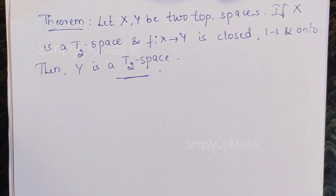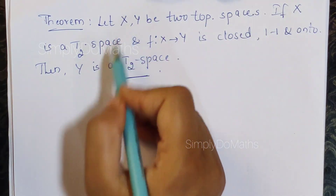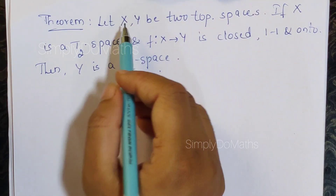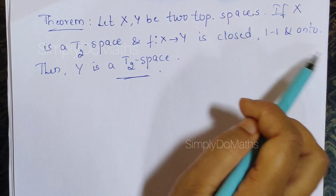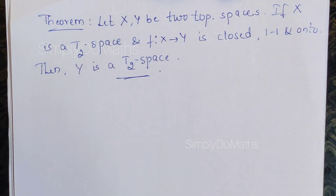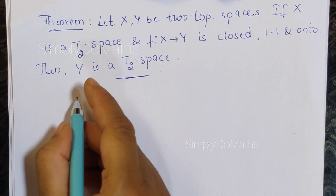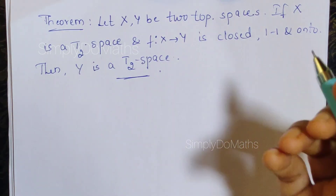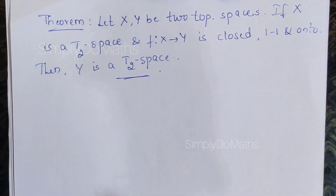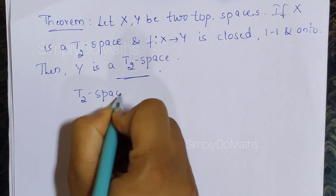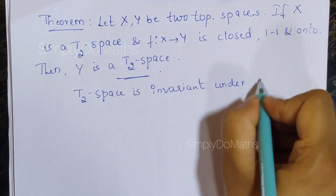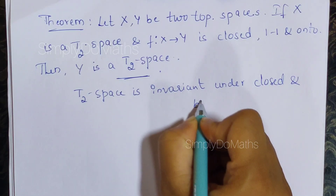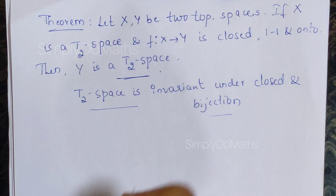We have an important property of T2 space. Let X and Y be any two topological spaces. If X is a T2 space, then Y will also become a T2 space if we construct a function f between X and Y such that f is closed, one-one, and onto — that is, closed and bijective. This property is called an invariant property, so the given statement can be rewritten as: T2 space is invariant under closed bijection.